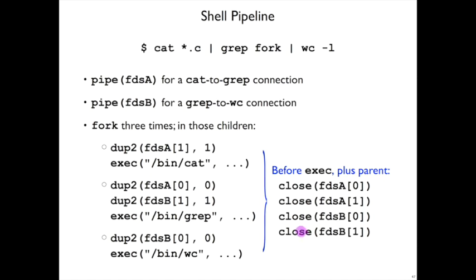Another way to arrange these things would be to fork this process before creating the fdsB pipes. There are different ways to organize it, but essentially the same pipeline structure has to be set up.